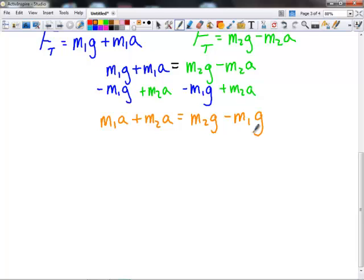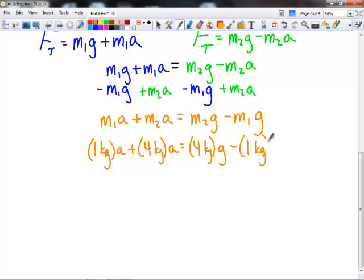You can substitute at any time for your masses. You could do it back in the very beginning if you wanted to. That's okay. It doesn't make the answer to your problem any different. Let's go ahead and substitute now. M1 we said before was 1 kilogram. So I'm going to say 1 kilogram times A plus M2, which was 4 kilograms, times A, equals M2, which was 4 kilograms, times G, minus 1 kilogram, times G.